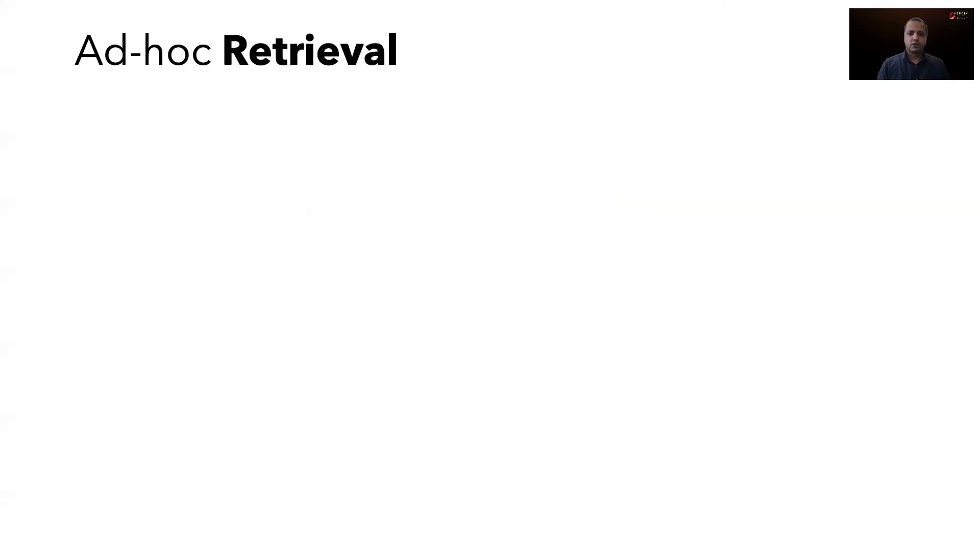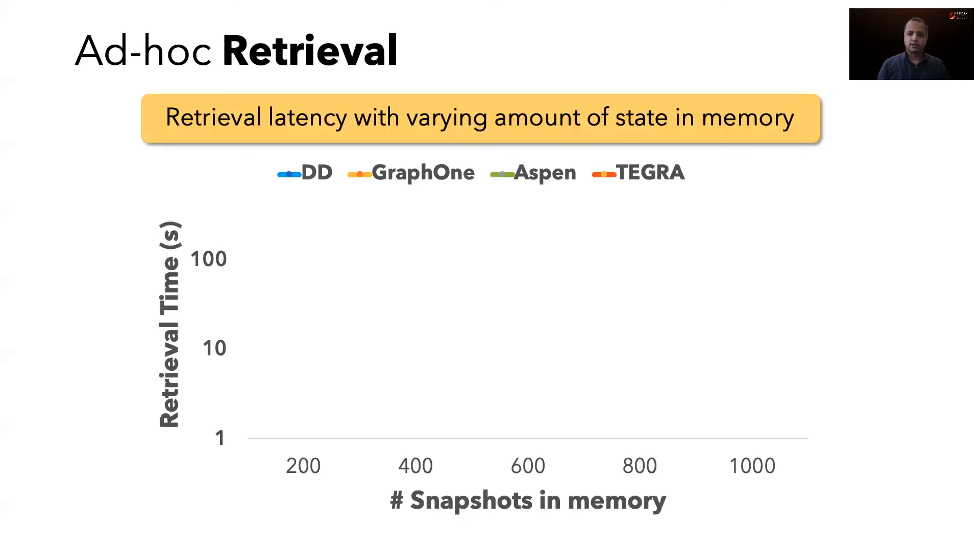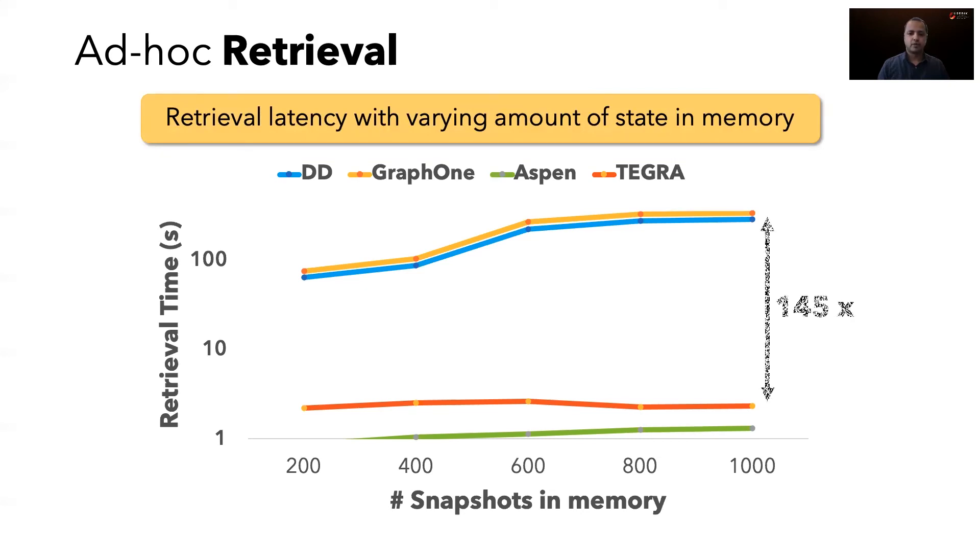The first result shows the ability of Tegra's distributed graph snapshot index to retrieve random snapshots. The x-axis here shows the number of snapshots in memory, and the y-axis shows the average time to retrieve a random snapshot from memory. We see that differential data flow and Graph1 show an increase in retrieval latency with increase in the number of snapshots stored, as they need to merge stored differences to create the snapshot. In contrast, Tegra and Aspen leverage persistent data structures and hence can retrieve snapshots without any computation. Here, Tegra is two orders of magnitude faster. Aspen is faster than Tegra due to its ability to compress the graph.